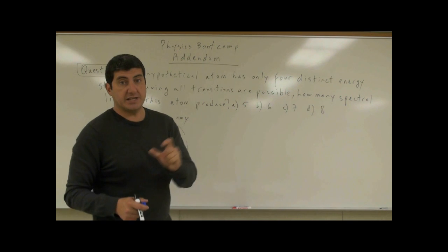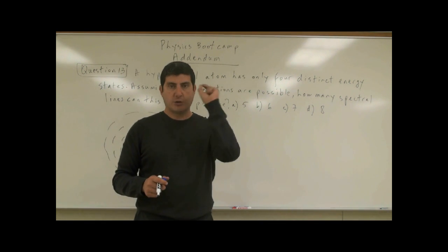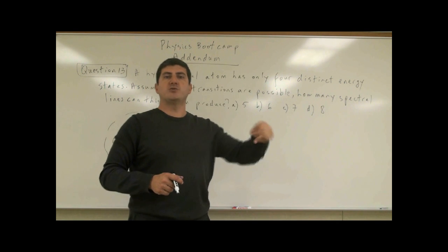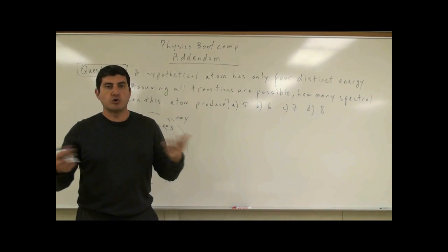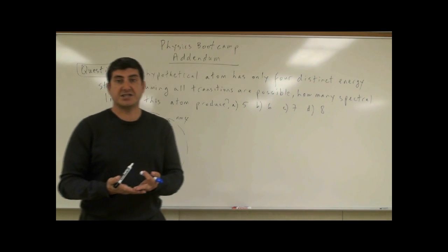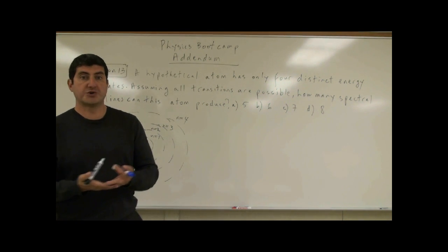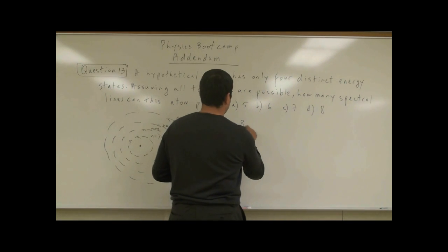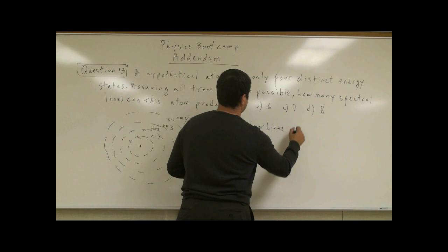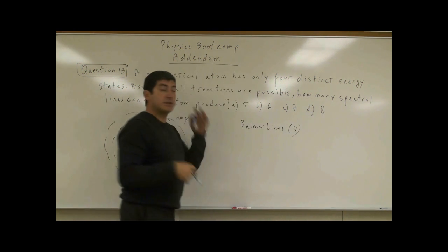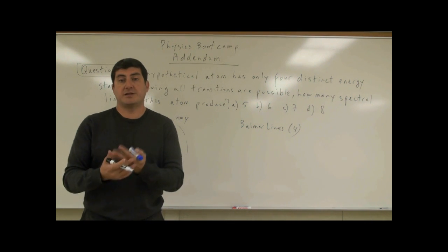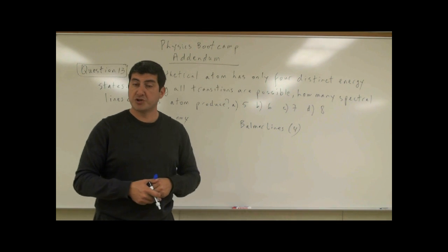If that spectral line is in the visible spectrum, we can see it as visible light — red, yellow, green, or whatever. For hydrogen, it gives you four visible lines called the Balmer lines. Other atoms have other spectral lines, sometimes more, sometimes less.